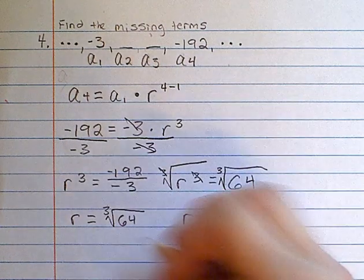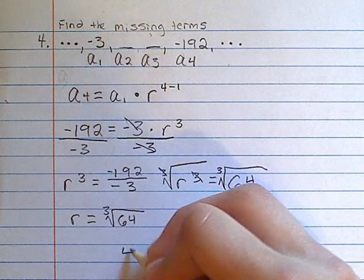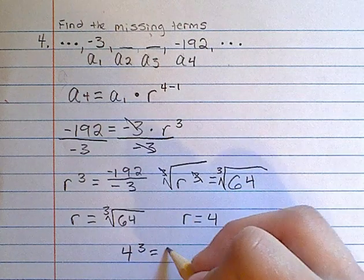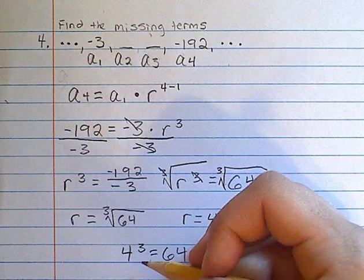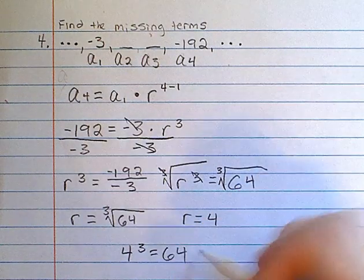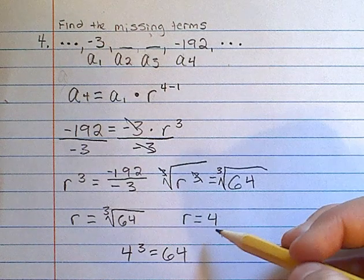We can check this by seeing if 4 cubed is equal to 64. 4 squared is 16 times 4, so 4 cubed is 64, so that is correct.